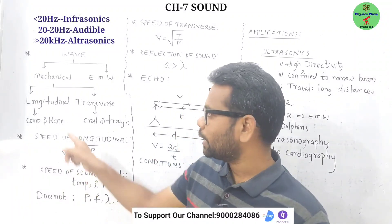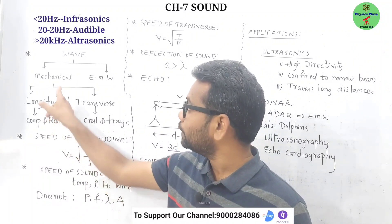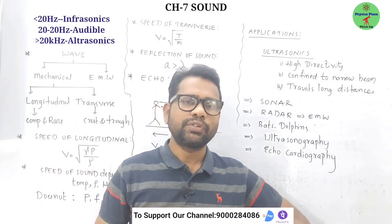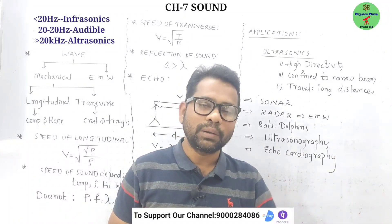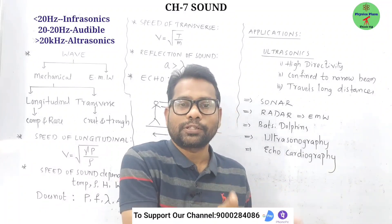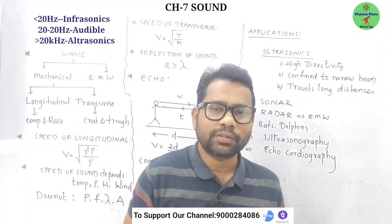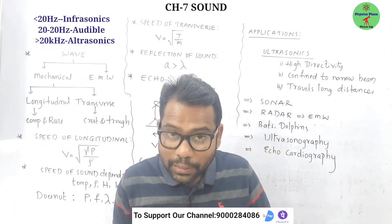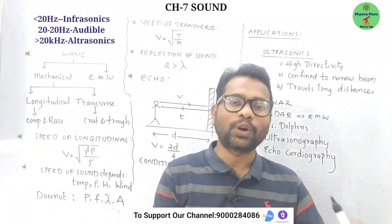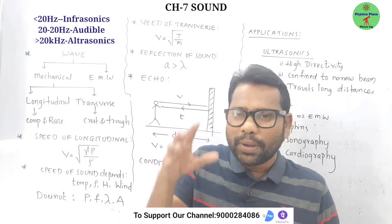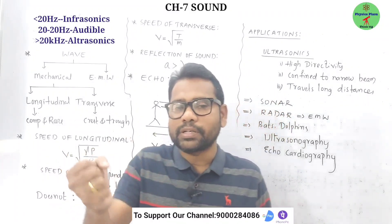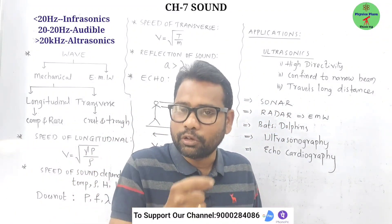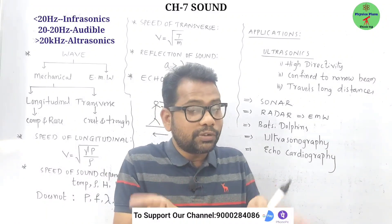Depending on whether a medium is required for propagation, we have two types of waves: mechanical waves and electromagnetic waves. Mechanical waves are waves which require a material medium for propagation. For electromagnetic waves, a material medium is not required at all.